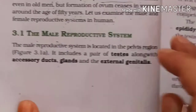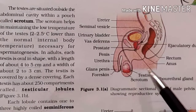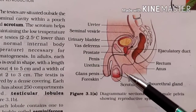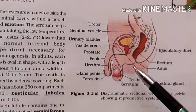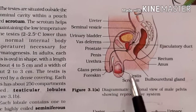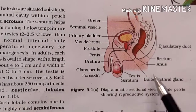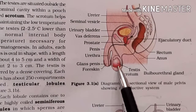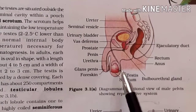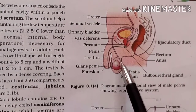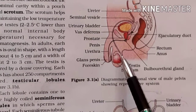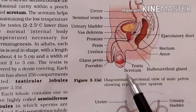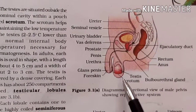The male reproductive system can be divided into primary sex organs. The primary sex organs are the testes.